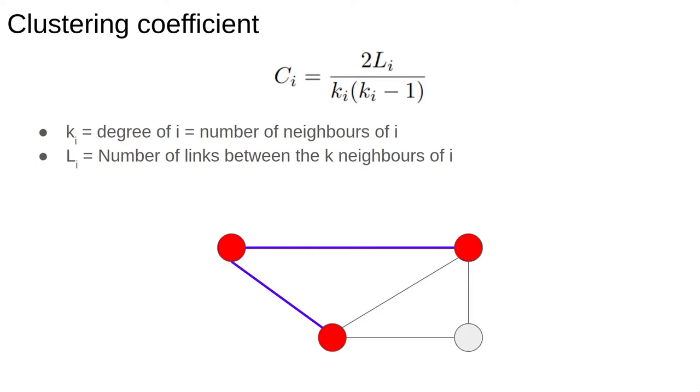The denominator is the number of possible connections between the nodes. Here I've added in blue the possible edges which could have existed, including the one which was part of the original graph. There are three possible connections between these three nodes.